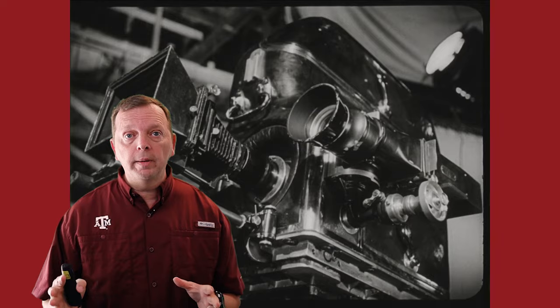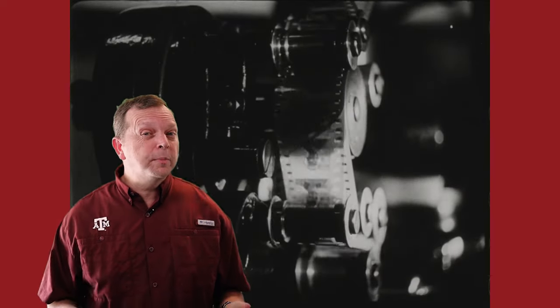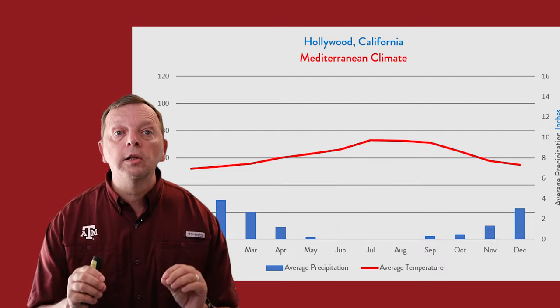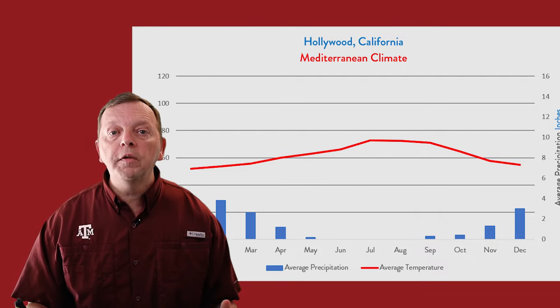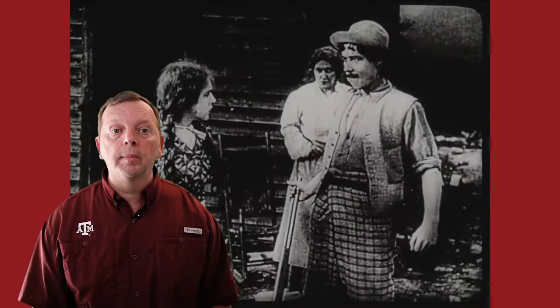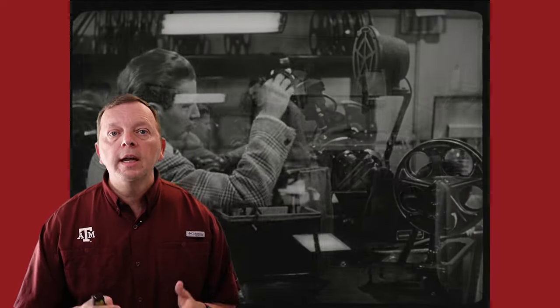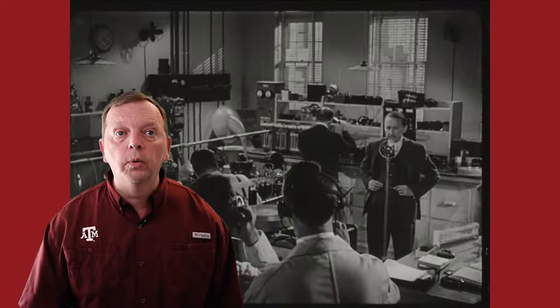For the United States, the Mediterranean climate was instrumental in determining where movies come from. Movies cost a lot of money to make, and filmmakers don't want to shoot in the rain. Southern California's Mediterranean climate offers long, dry summers, giving movie makers more time to film outdoors. This is why movie makers moved to Southern California and established what we now know as Hollywood — just one example of how climate has influenced the settlement patterns of people around the world.